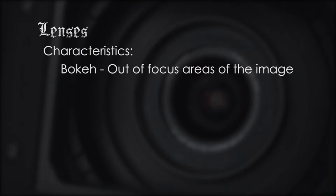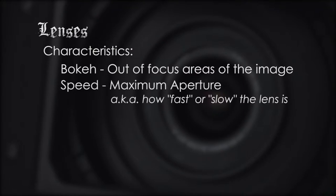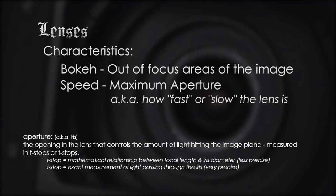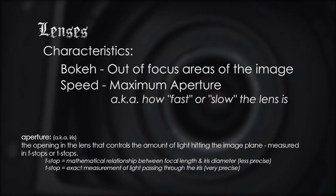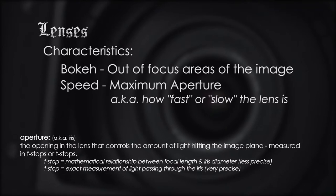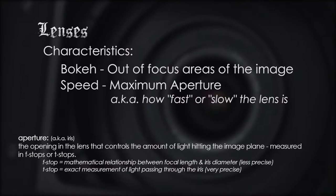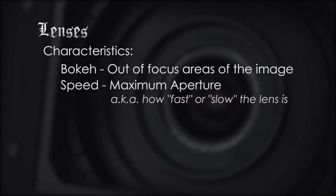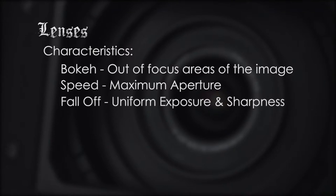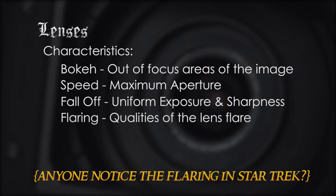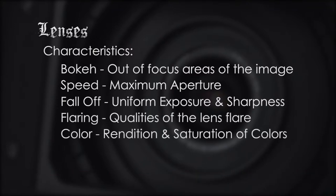Characteristics that you'll want to keep an eye on are: bokeh — how the out-of-focus areas are rendered; speed — how fast is the lens, and how does it look when it's wide open? Is it too soft for your taste? Is there a sweet spot in the lens where it is sharp but still has a nice shallow depth of field? Does the image start to suffer when the lens is stopped down too far? Fall off — is the lens uniform in exposure? Do you see vignetting around the edges? Is the focus sharp from edge to edge? Flaring — what happens when the lens is flared? Is the lens flare pleasing to you? Color — how does the lens reproduce color? Is it warm? Is it cool? What does it add or take away from the image?